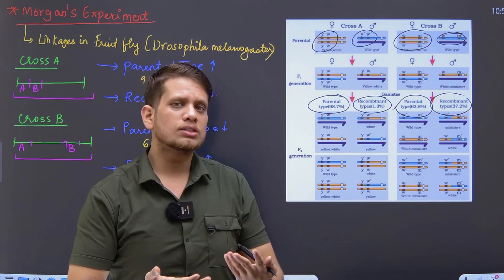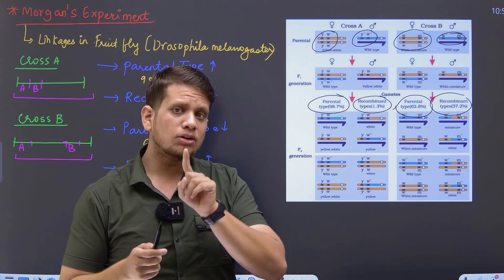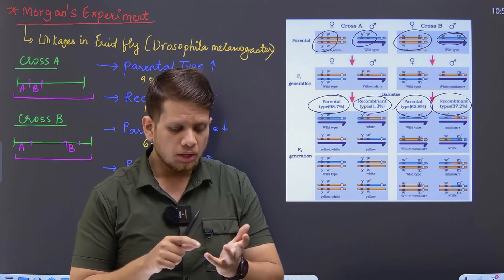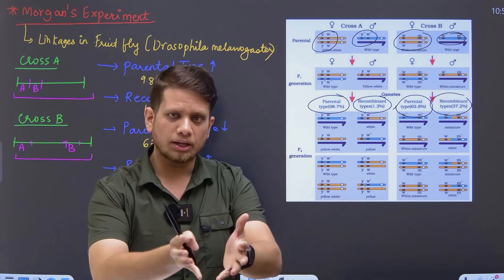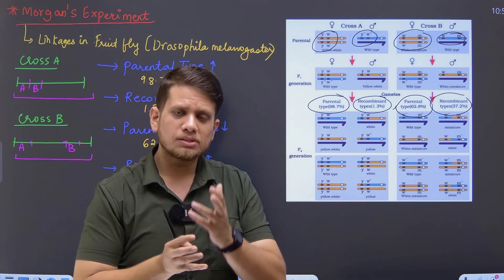And because chances of crossing over increase, the recombinants, recombinant means again I'm explaining, new characters introduced in that organism, their percentage increases.